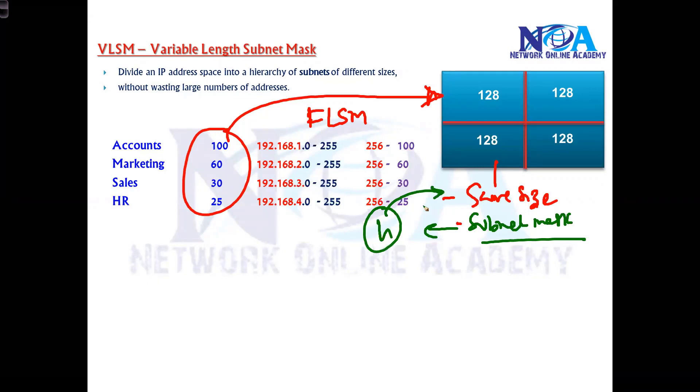But the problem is: out of 128, I'm just using 100 in Accounts, 60 in Marketing, 30 in Sales, and 25 in HR. So you can see there's still wastage.